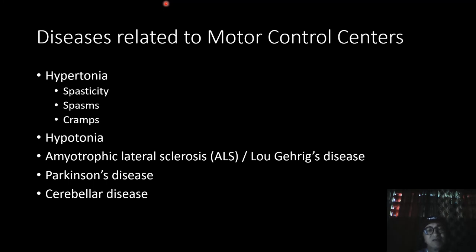Finally, cerebellar disease is often caused by head trauma, stroke, infections, or immune diseases that can damage the cerebellum. People with cerebellar damage cannot start or stop movement quickly or easily, and they cannot combine the movements of several joints into a single, smooth, coordinated motion. Symptoms of cerebellar disease also include unstable posture and awkward gait.